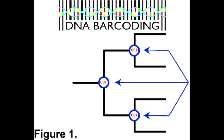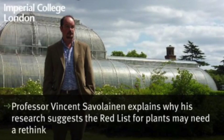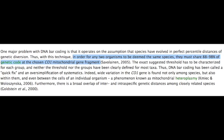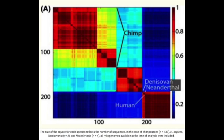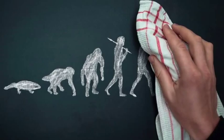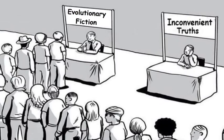In 2005, Vincent Savelinian stated that in order for any two organisms to be deemed the same species, they must share 88 to 98 percent of the genetic code chosen at the CO1 mitochondria gene fragment. This means that because chimps have 131 base pair fragments different from us, they are unrelated and a different species. That's a 20 percent difference between us and them, meaning we only share 80 percent of the CO1 genetic code with chimpanzees, our supposed closest common ancestor.